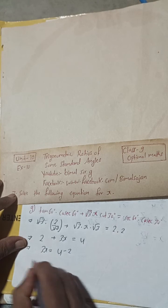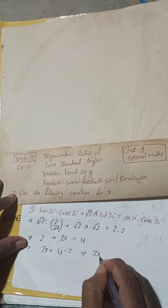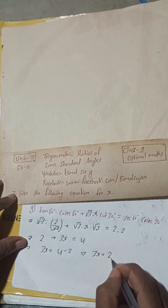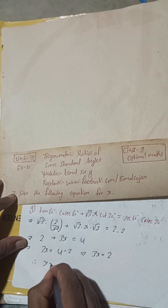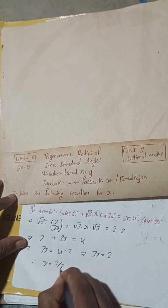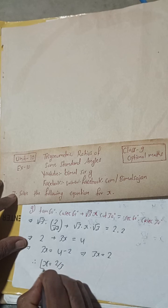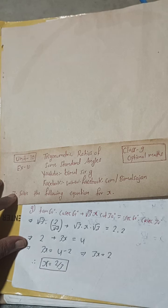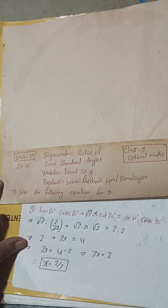This will be minus 2. This implies 3x is equal to 4 minus 2. Therefore x is equal to 2 by 3. So this is the complete solution of your 7G.